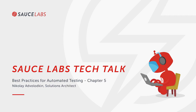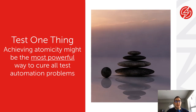I want to talk a little bit about atomic tests before we actually dive into this exercise. Atomic tests simply means testing one thing, testing a single feature, validating that a single functionality is working. You know you have an atomic test when you have one assertion in your test.